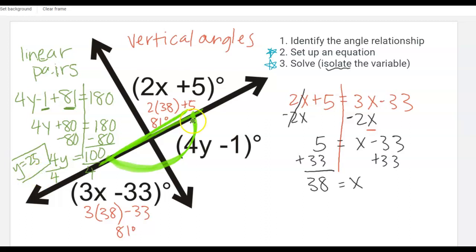Now I can take that and plug that back in. 4 times 25 minus 1 is what this angle is going to be equal to. So 4 times 25 is where I get my 100 and minus 1 that puts me at 99.